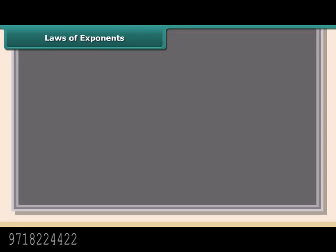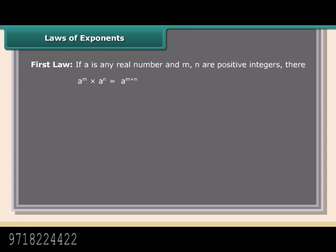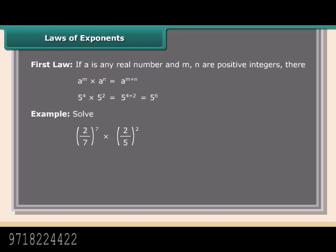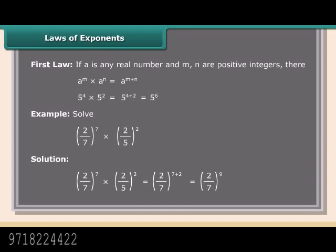First law of exponents: If A is any real number and M, N are positive integers, then A raised to the power M into A raised to the power N equals A raised to the power M plus N. For example: 5 raised to the power 4 into 5 raised to the power 2 equals 5 raised to the power 6. Example: Solve 2 upon 7 raised to the power 7 into 2 upon 7 raised to the power 2, which equals 2 upon 7 raised to the power 9.